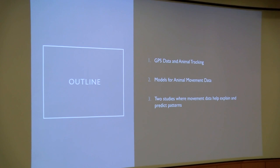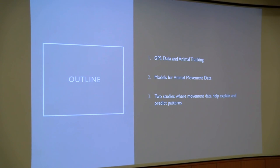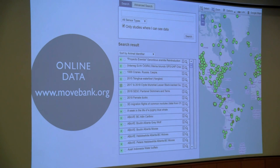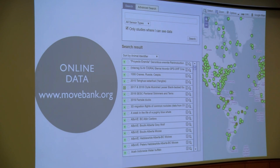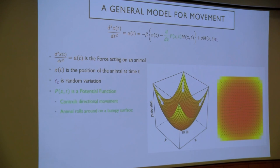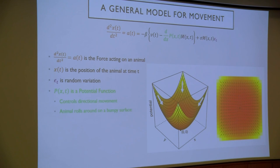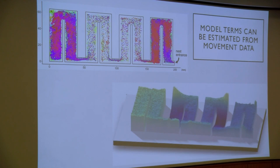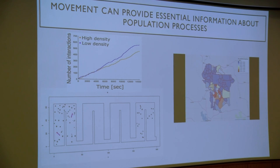So what have we talked about today? I started by showing GPS data and what animal tracking looks like. We talked through models for animal movement data, then two studies where movement data helped explain and predict population-level processes. You can go look at movement data yourself — tag your dog or look at data on MoveBank. Differential equations are just rates or slopes, and the model we built is useful for a wide range of movement data. By estimating model terms from data, we can understand population processes that we really couldn't understand without the movement data themselves.